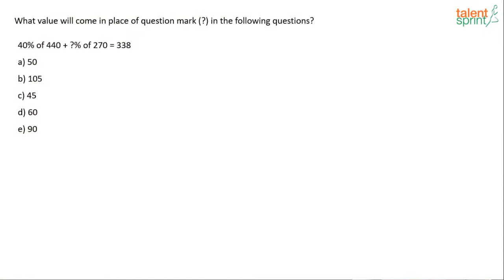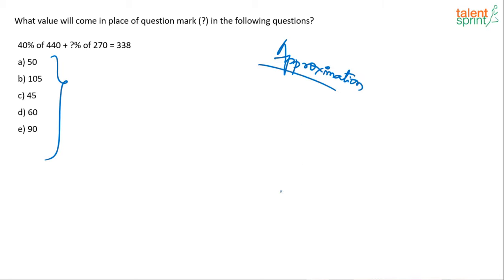Next question: 40% of 440 plus what percent of 270 equals 338. Every simplification question is about numbers, so you should be quick. Options are 50%, 105%, 45%, 60%, and 90%. I would first apply the approximation method here because the options are spaced out — 50 and 105 are very different, making approximation viable. It will at least give you a range even if not the exact answer.